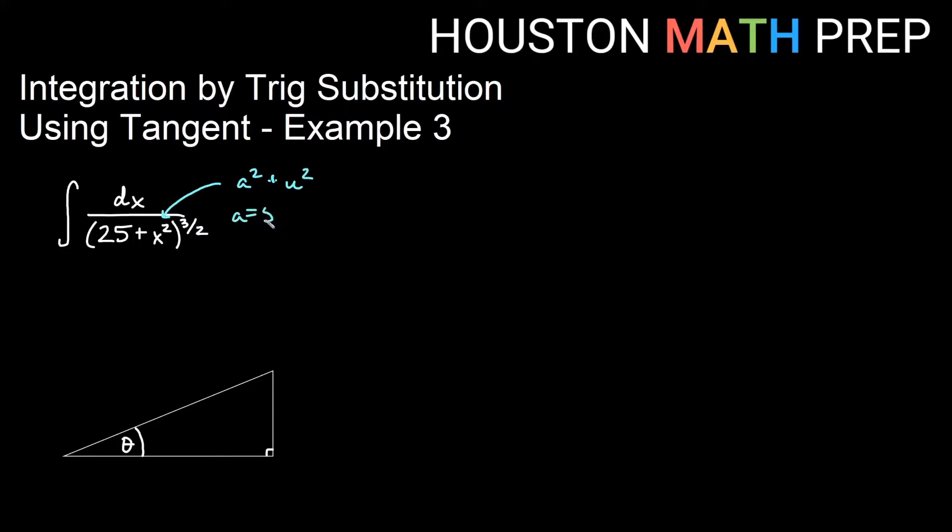Our a is 5 in this example, and our u is x. So when we say tangent substitution, we let u equal to a tangent of theta, and that gives us then that x is equal to 5 tangent of theta. Of course, we'll also need a substitution for dx. So we'll take the derivative, and derivative will give us 5 secant squared theta d theta there.